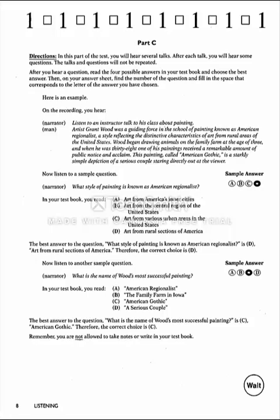Now listen to another sample question. What is the name of Wood's most successful painting? In your test book, you read: A. American Regionalist. B. The family farm in Iowa. C. American Gothic. D. A serious couple. The best answer to the question 'What is the name of Wood's most successful painting?' is C. American Gothic. Therefore, the correct choice is C. Remember, you are not allowed to take notes or write in your test book.